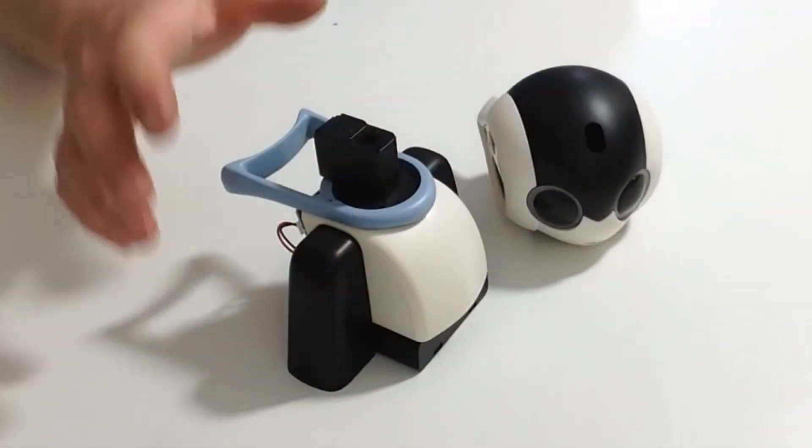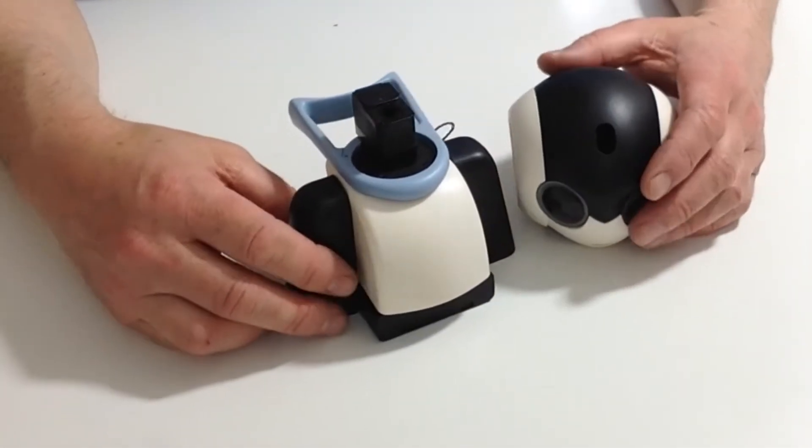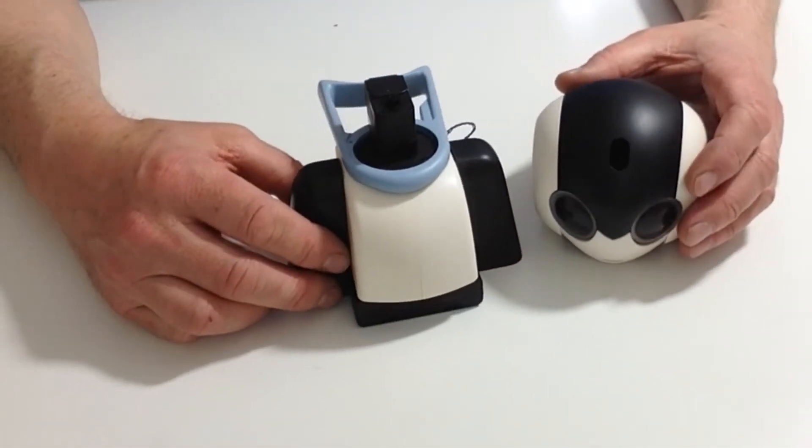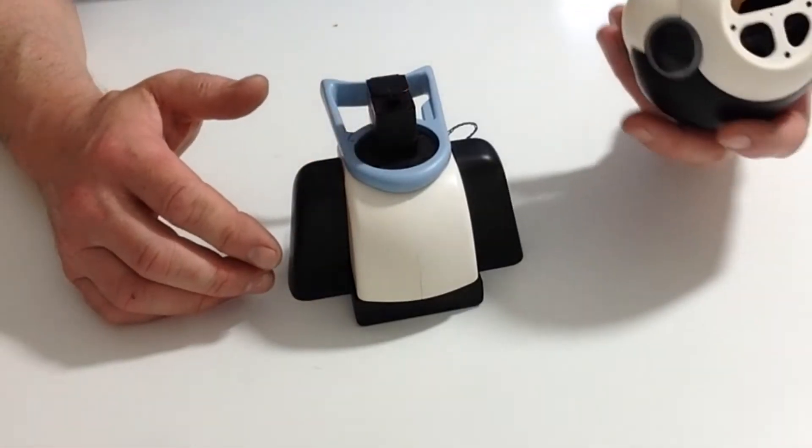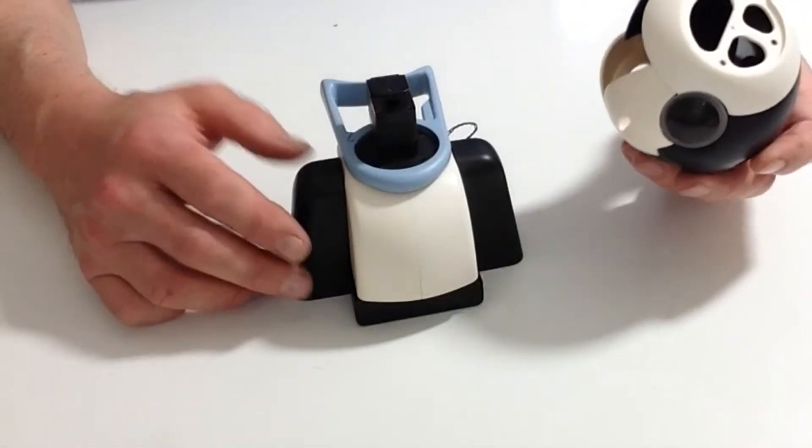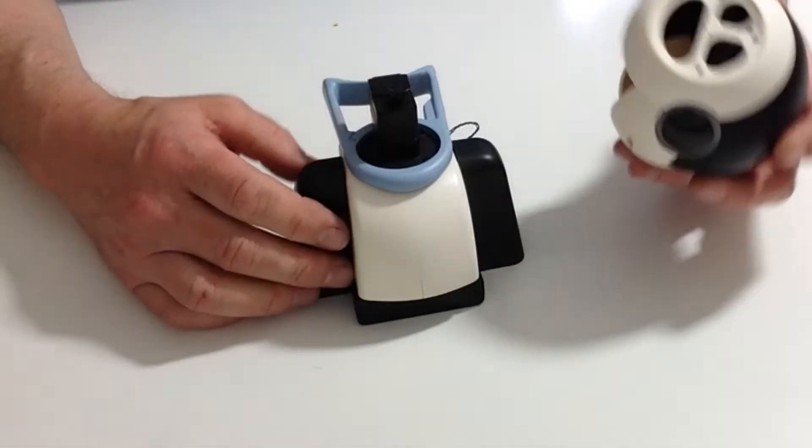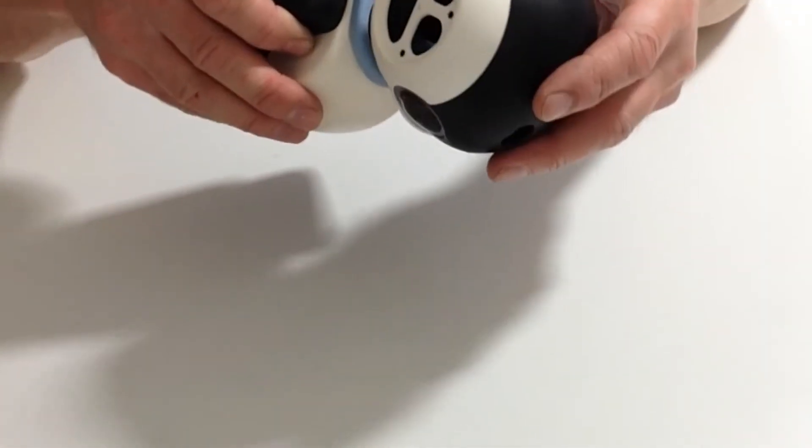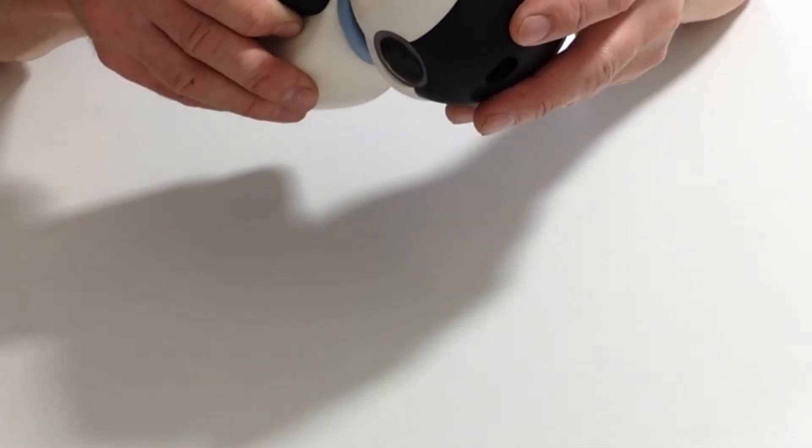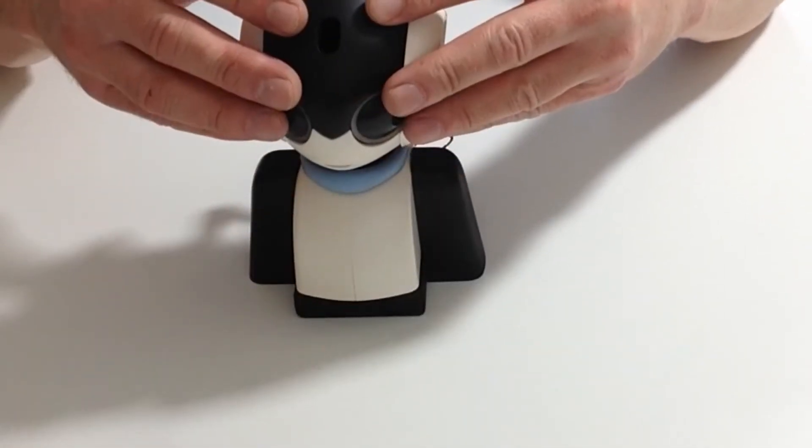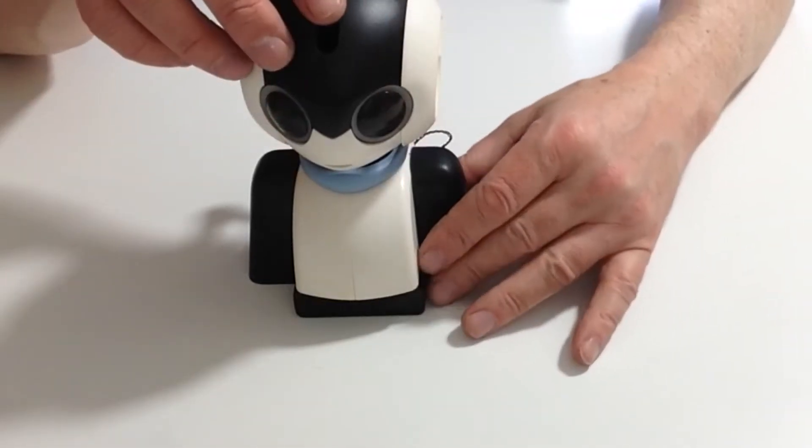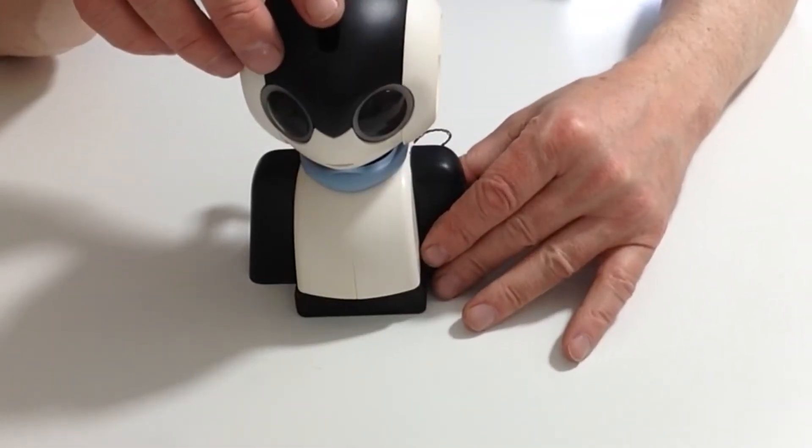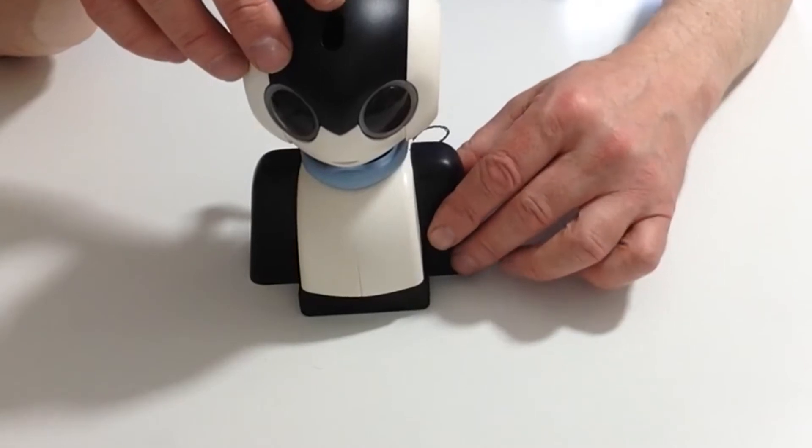Now take the neck stand that you assembled in stage 6 and locate the small notch in the servo shaft. Line that up with Robbie's head and gently place the head onto the servo. Once it's on, gently push down. Do not force the head from side to side because next we're doing the head test.